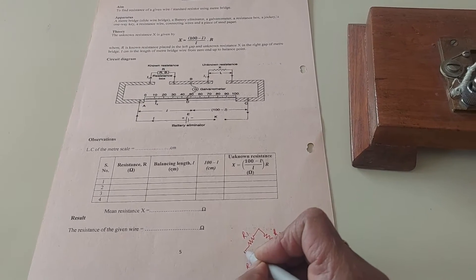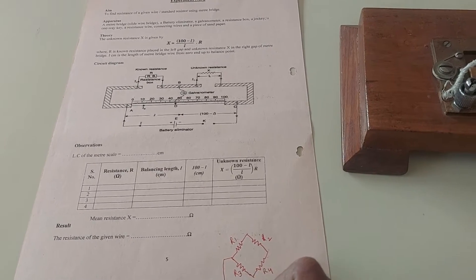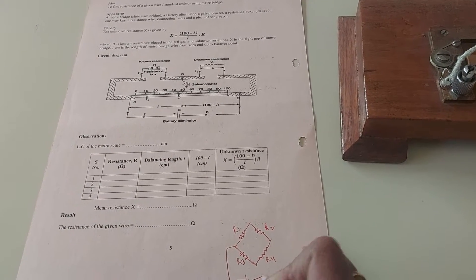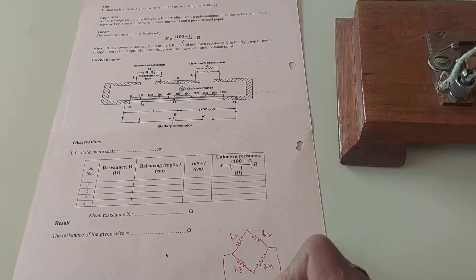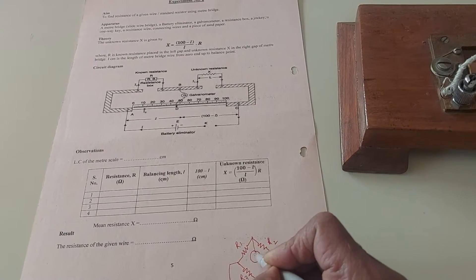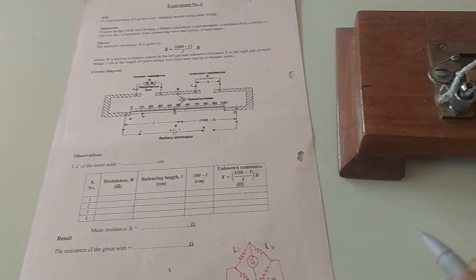Between the two vertices of this quadrilateral we put the battery, and between the other two vertices we put a galvanometer.